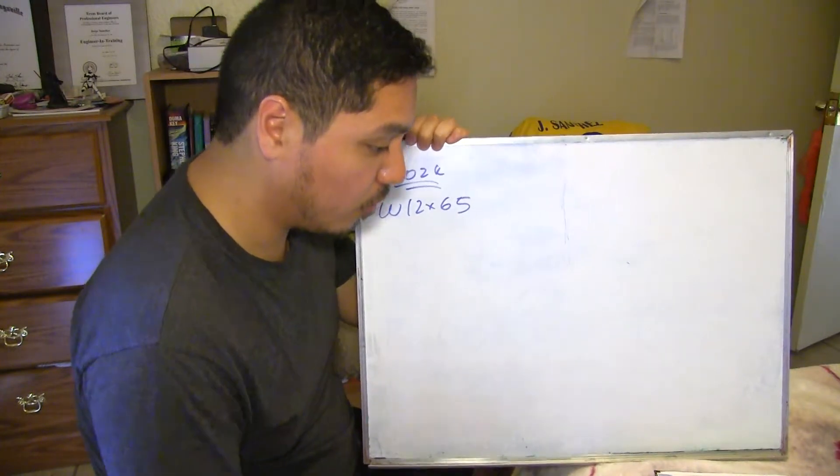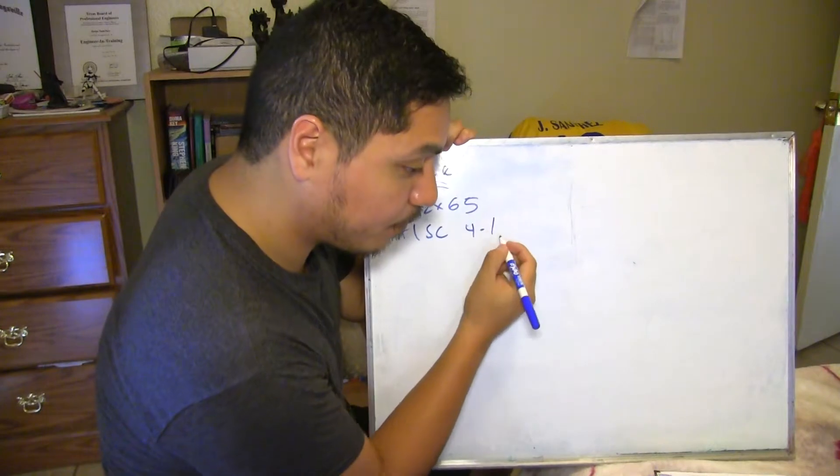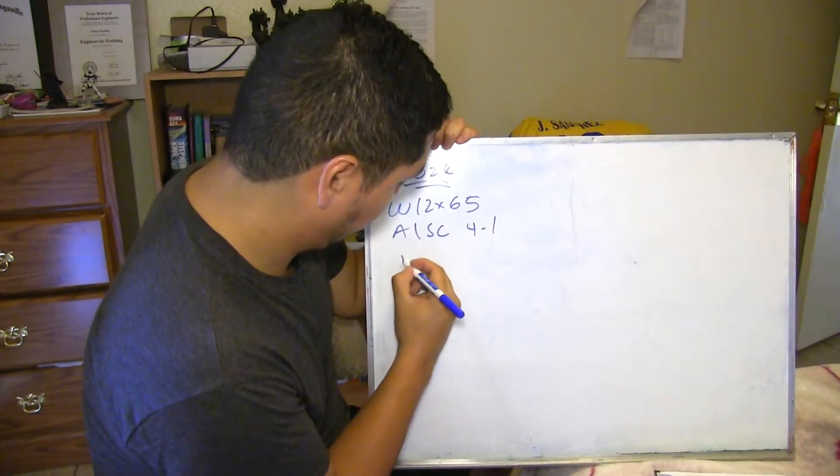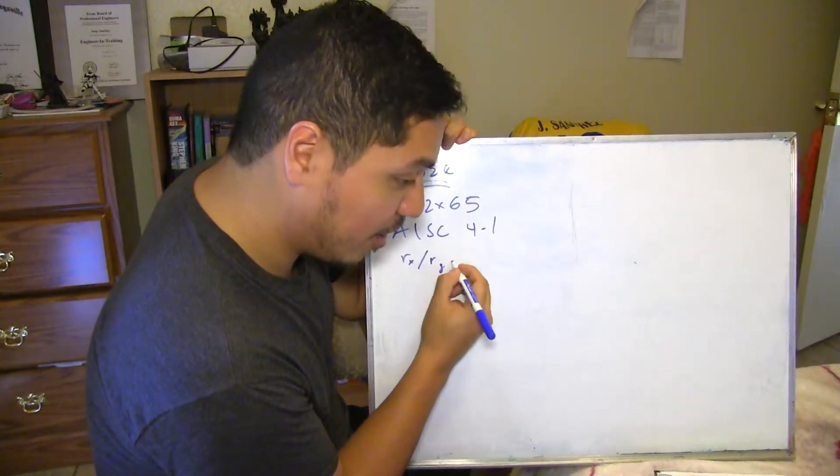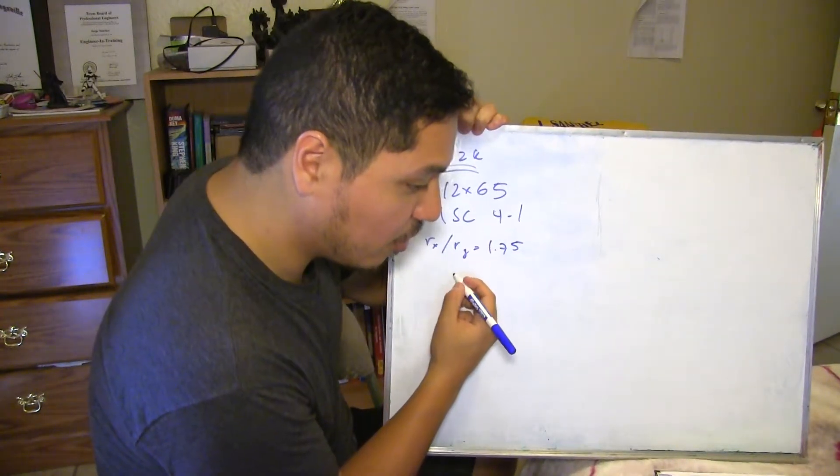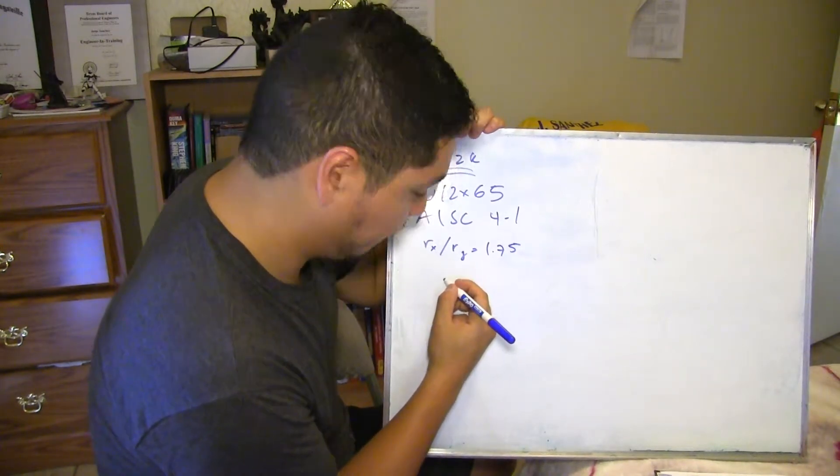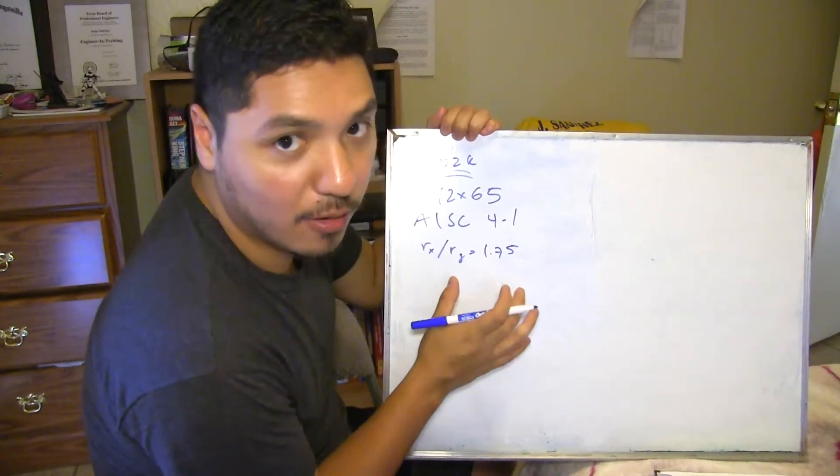Now, we're going to, from table, from the AISC table 4.1, we're going to get this ratio. Rx over Ry is equal to 1.75. And we're going to use this equation to calculate the length. Alright, this is for strong and weak axis. We need to see, to check that because it's braced in certain axes.